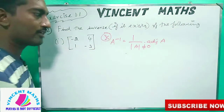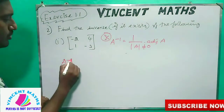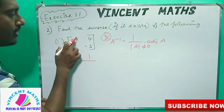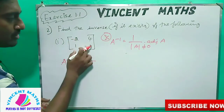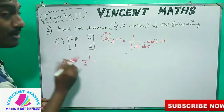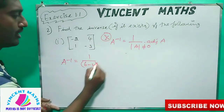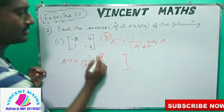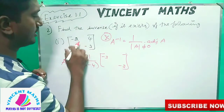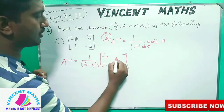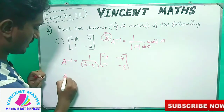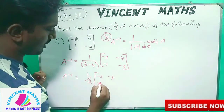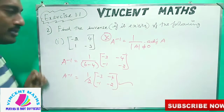Let's talk about A inverse. If we do a 2x2 matrix, we can do it easily. It is 1 by the determinant of A. The determinant is minus 2 into minus 3 plus 6, which gives plus 4, so it is minus 4. The adjoint of A: we change the diagonal entries — minus 3, minus 2 — and the signs: minus 1, minus 4. So A inverse is 1 by 2 into the matrix [minus 3, minus 4; minus 1, minus 2]. It is very simple.